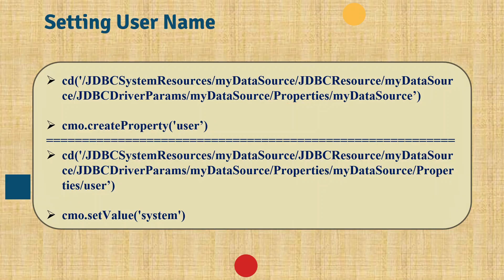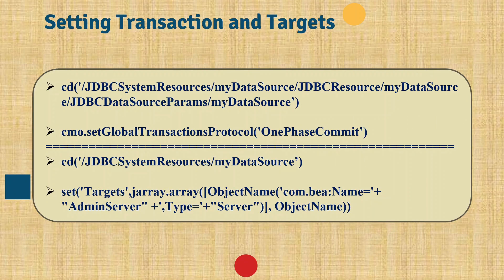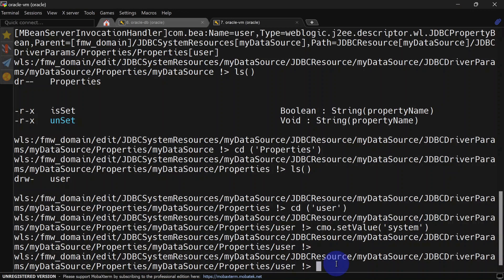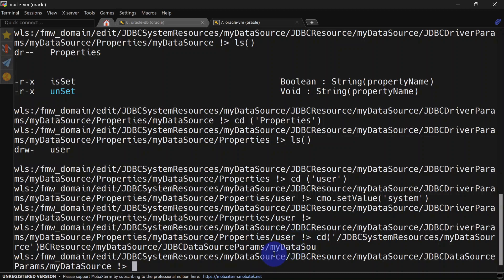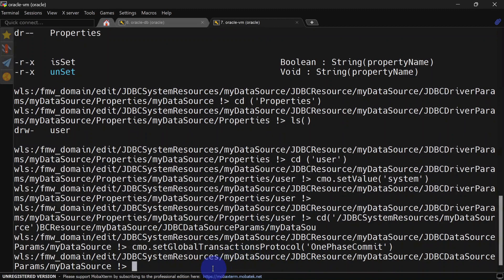The next step is to set the transaction and target. Here we are setting the transaction protocol to one-phase commit; you can also use two-phase commit depending on your database. To target the data source, use setTarget with the target name and target type. Here we are targeting to AdminServer with type 'Server'. If you want to target to a cluster, write the cluster name and set the type to 'Cluster'. So we cd to JDBCDataSourceParams, set the global transaction protocol to one-phase commit, then go to the JDBC system resource and set the target.